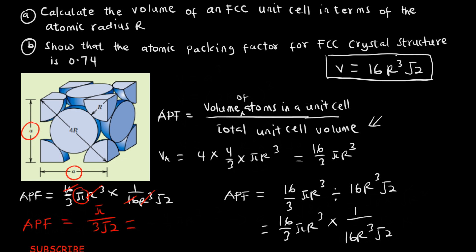Evaluating π / (3√2) gives a value of 0.74. This shows that the atomic packing factor for an FCC crystal structure is 0.74. All you have to do is follow these steps. Thank you very much for watching this video — please don't forget to like and subscribe.